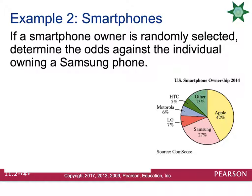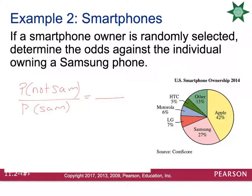There's a chart here about smartphones. If a smartphone owner is randomly selected, determine the odds against the individual owning a Samsung. So we want the probability that it's not a Samsung divided by the probability that it is a Samsung. All probabilities added together should add up to 100%. The percentage of people that own Samsung is 27, so there's a 27 out of 100 chance of owning a Samsung. You can do 100 minus 27 to find that 73 out of 100 owners do not own a Samsung.